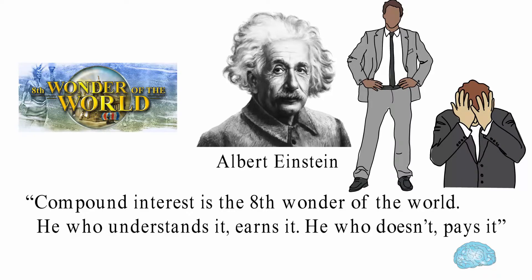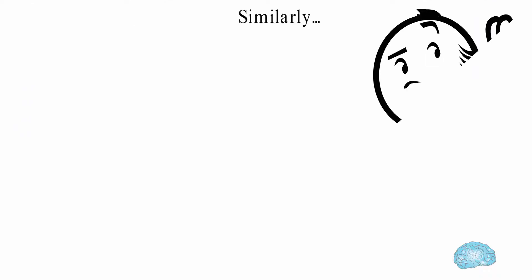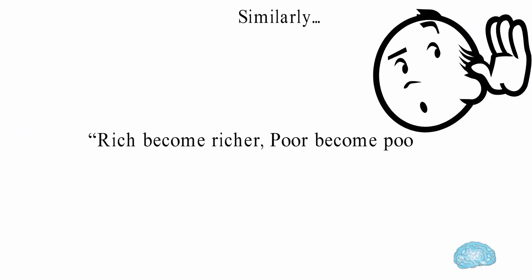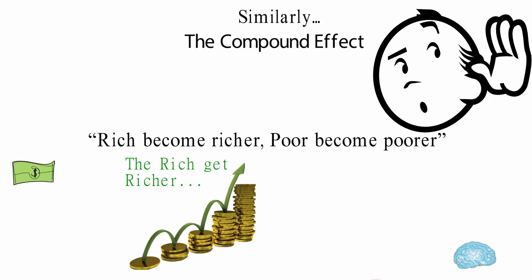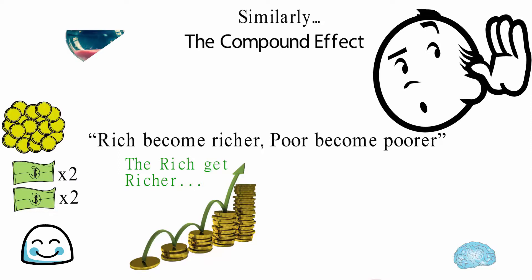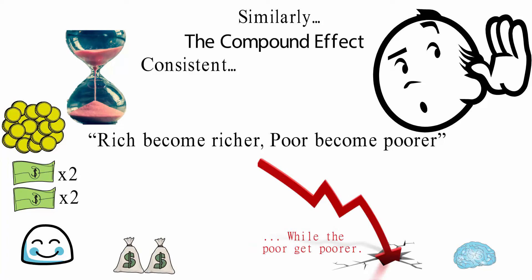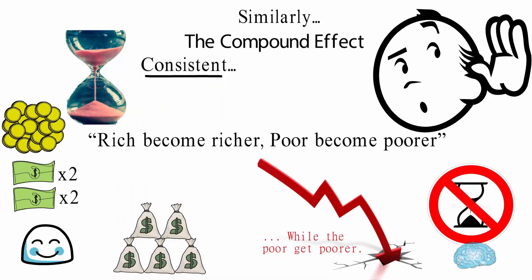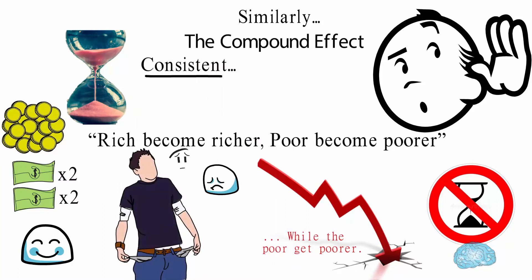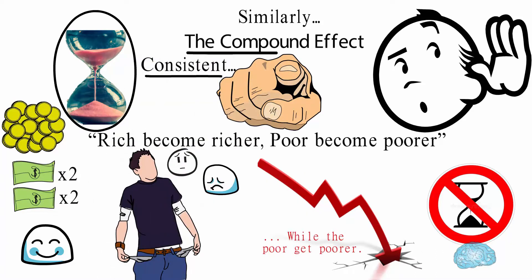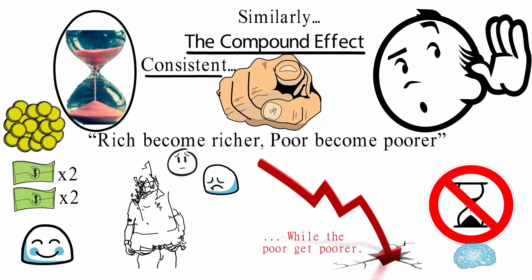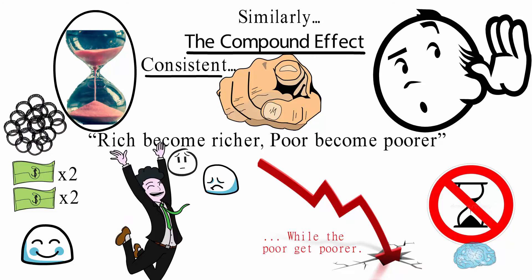Similarly, if you have ever heard the saying 'rich become richer, poor become poorer,' it is because of the compound effect. The rich understood how to double their money, then double again, and keep gaining wealth. They are patient and consistent, hence they become richer. But the poor, wanting to become rich immediately, don't want to wait and are also not consistent. Due to this, they keep on losing money, hence they become poorer. Now the choice is yours: be patient and consistent to use the compound effect and gain wealth, or trying to get rich overnight, lose all your wealth. Choose wisely.